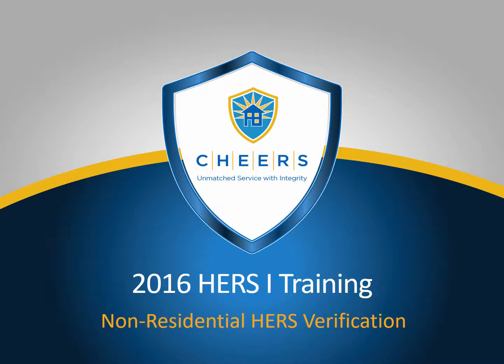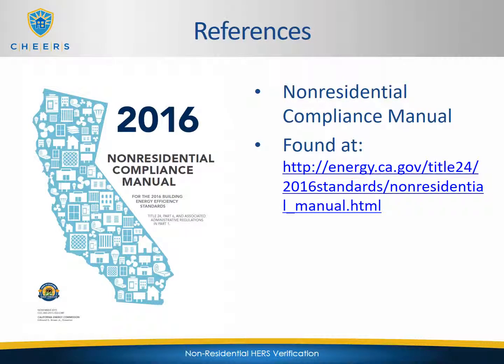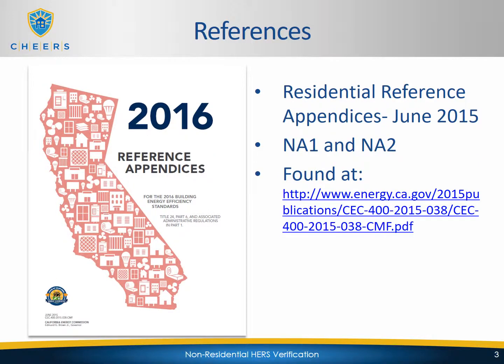Non-Residential HERS Verification. The material in this training was taken from two reference sources. The first is the Non-Residential Compliance Manual, found at the Energy Commission's website at the link listed below. The second is the Non-Residential Reference Appendices, Sections NA1 and NA2, which are Non-Residential Appendices 1 and 2. They're both found in the same manual and also on the Energy Commission's website.